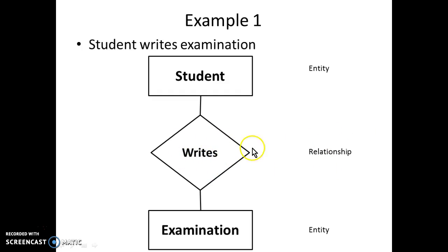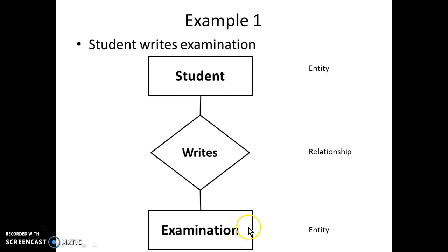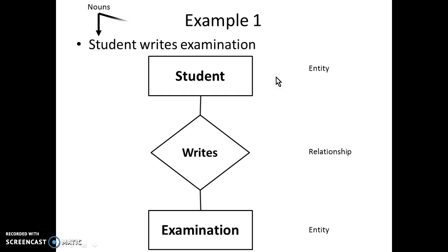For a relationship we use diamonds, and we use connections to link an entity and a relationship. Those connections cannot be used directly between two entities, but they can be used between an entity and a relationship, or between an entity and an attribute — we will see what an attribute is later on.